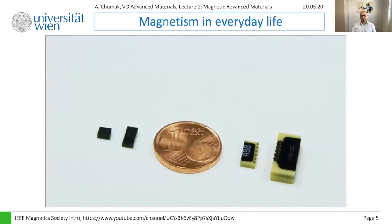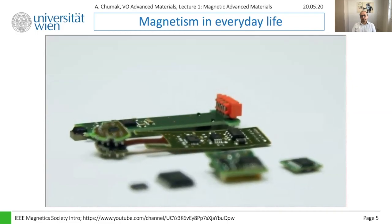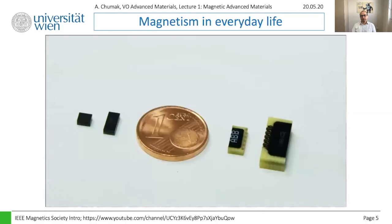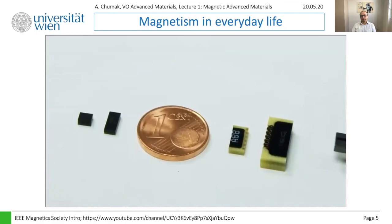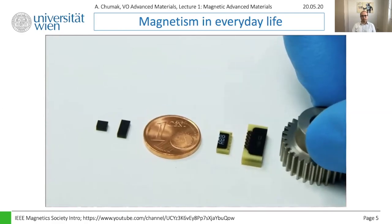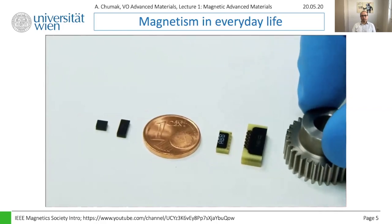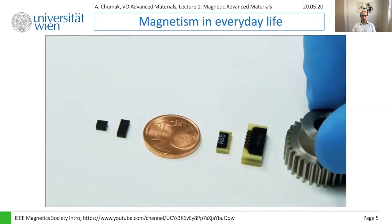One type of magnetic device found all around us is the magnetic sensor. Dozens of these sensors are used in every modern car. Magnetic sensors precisely identify the location of a magnet; if the magnet is attached to the shaft of a motor, the sensor can precisely read the speed of rotation.